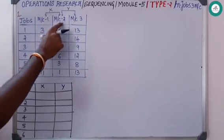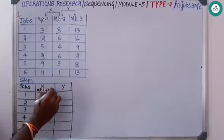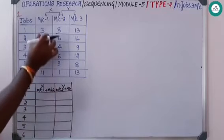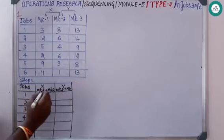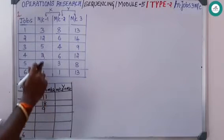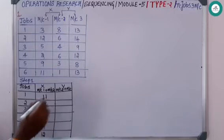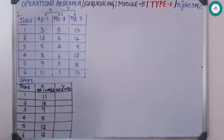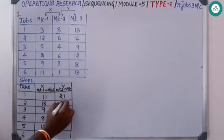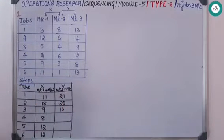For column X, add machine one plus machine two. For column Y, add machine two plus machine three. Computing the values: 3+8=11, 12+6=18, 5+9=14 (wait — next: 2+6=8, 9+3=12 — sorry, 11+1=12), then 8+13=21, 6+14=20, 4+9=13. Write down all these combined values for each job.